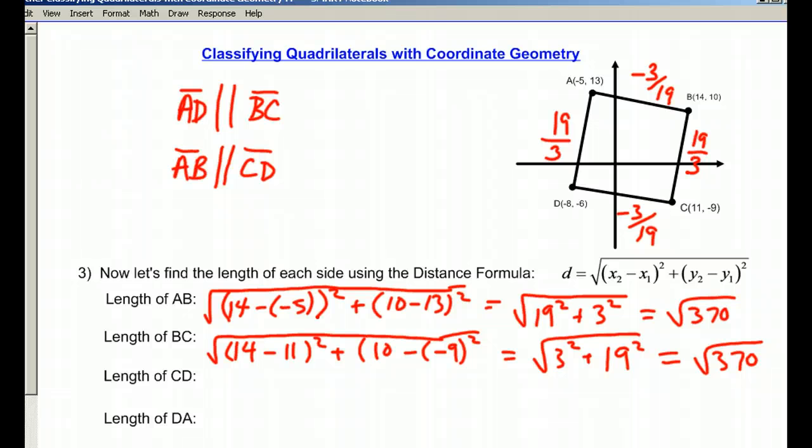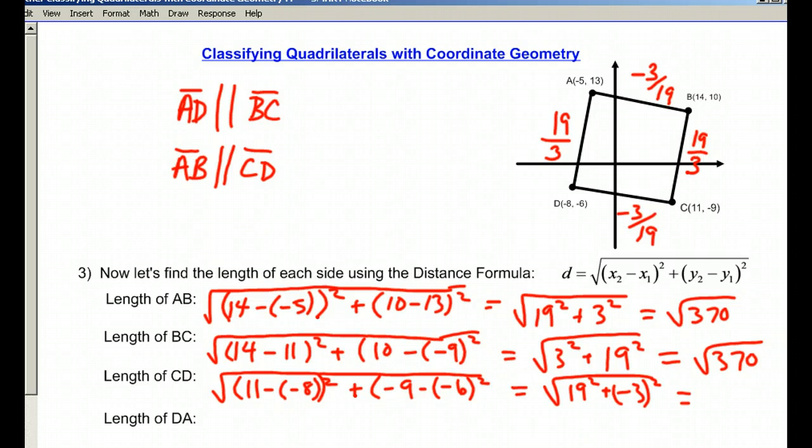The length of CD is going to be the square root of (11 minus negative 8) squared plus (negative 9 minus negative 6) squared, which comes out to be 19 squared plus negative 3 squared, equal to the square root of 370.